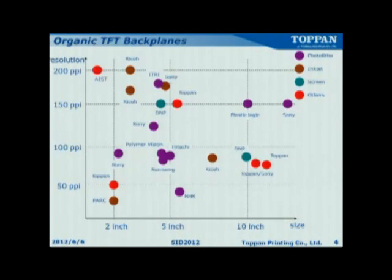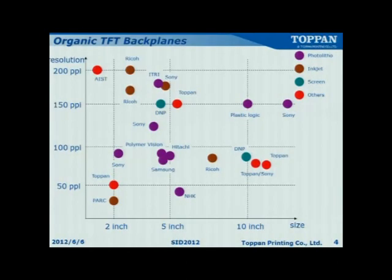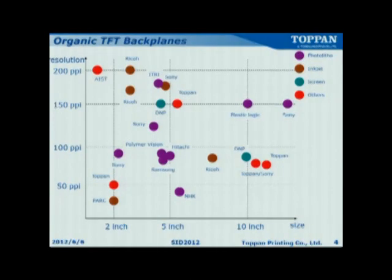These are examples of organic TFT backplanes for display. The purple circle shows a TFT backplane which was processed by photolithography. Brown is inkjet, green is screen printing, and red is others. As you can see, almost all TFT backplanes have been fabricated by photolithography and inkjet process. Needless to say, photolithography is not a low-cost process.